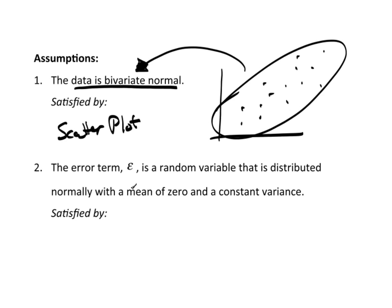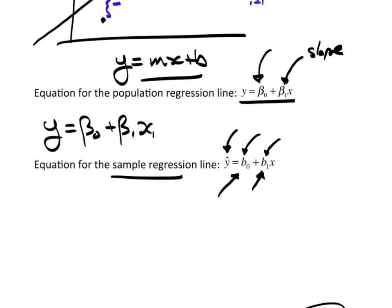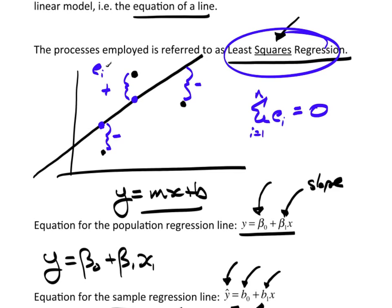The error terms, the epsilons, is a random variable that is distributed normally with a mean of zero and a constant variance. Now, remember I said earlier when I did this graph, come back up here. I said these are e's, the error terms. Well, this is from sample data.